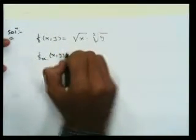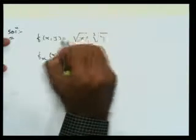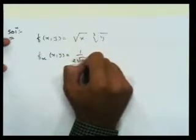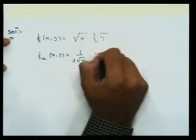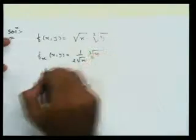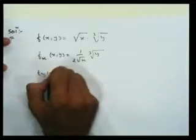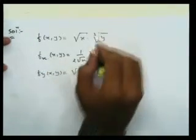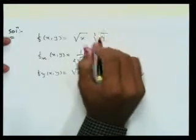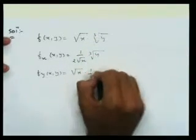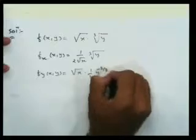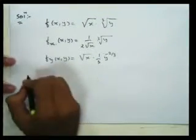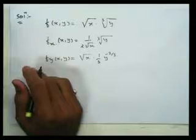Consider f(x,y) = √x · ∛y = x^(1/2) · y^(1/3). Then fx(x,y) = (1/(2√x)) · y^(1/3), which is constant with respect to x's cube root part. And fy(x,y) = √x · (1/3)·y^(−2/3). Now we will use the alternating form of the Taylor series.